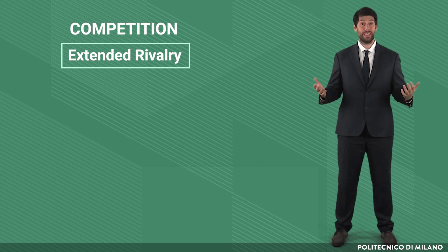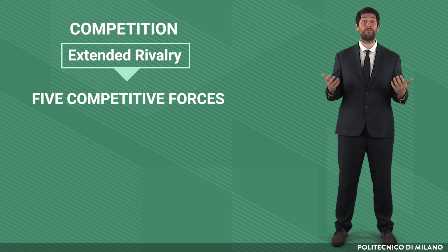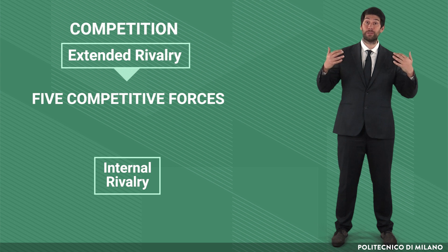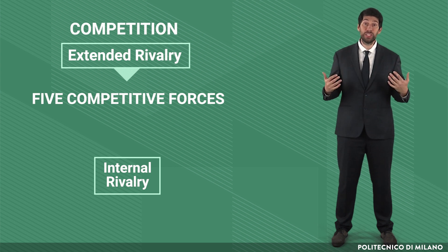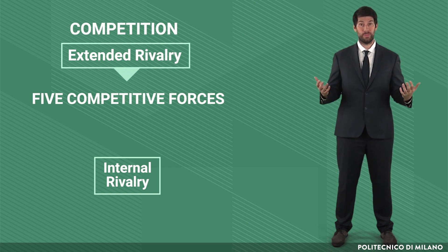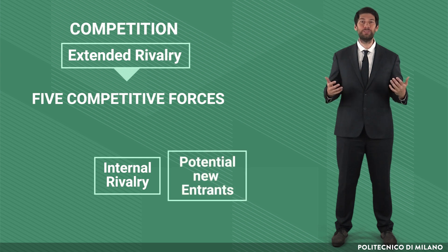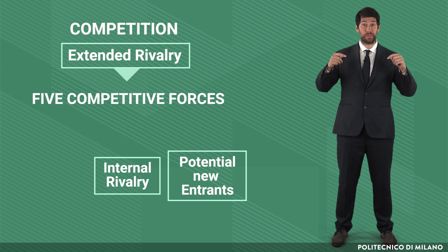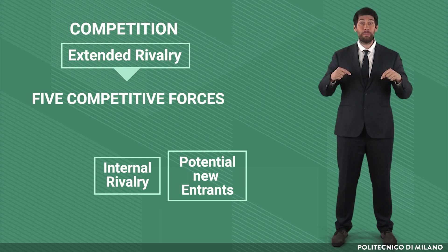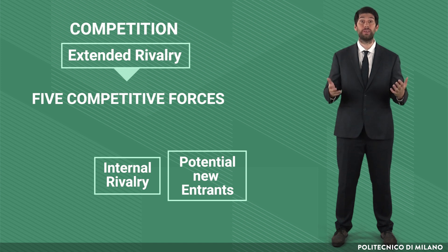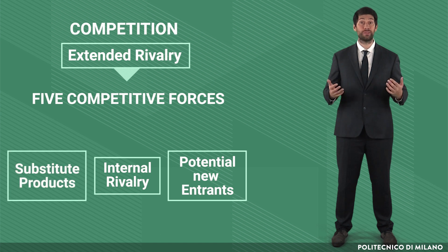According to Porter, extended rivalry is made of five competitive forces. First, intensity of internal rivalry — that is, the competition among incumbents. Second, potential new entrants, or all companies that do not belong to the business area under scrutiny but may have the intention and the resources to enter it. Third, substituted products and services.